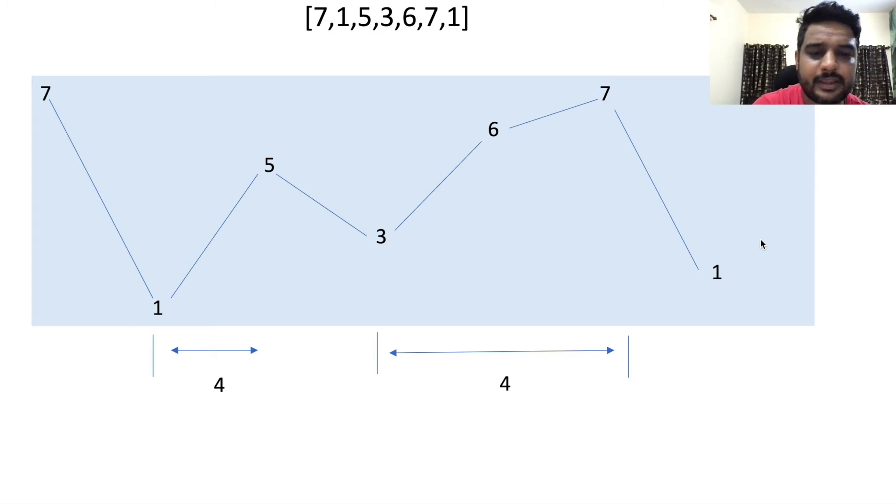That's the logic behind it. If we see this example from this approach, at 1 we bought and at 5 we sold, the difference is 4. At 3 we bought and at 7 we sold, the difference is again 4. So our sum is 8.